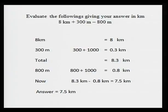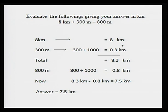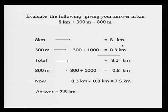Let's look at a second example: evaluate the following giving your answer in kilometers. We have different units, so we convert all numbers into kilometers. 8 kilometers is already in kilometers. 300 meters divided by 1,000 equals 0.3 kilometers. Adding: 8 plus 0.3 equals 8.3 kilometers. We subtract 800 meters, which equals 0.8 kilometers. So 8.3 minus 0.8 equals 7.5 kilometers.